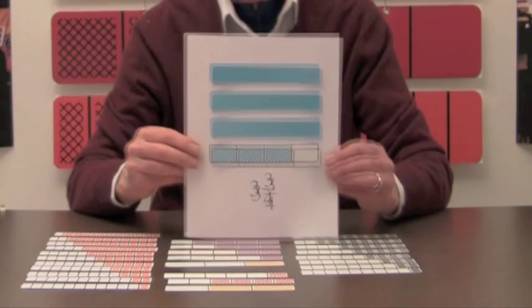The whole number parts of mixed numbers can be illustrated by using the backs of fraction bars. For example, the back of this blue bar can be used to represent one whole bar. So the mixed number three and three-fourths can be represented as shown here. Such representations will be used in this video to illustrate the addition of mixed numbers.